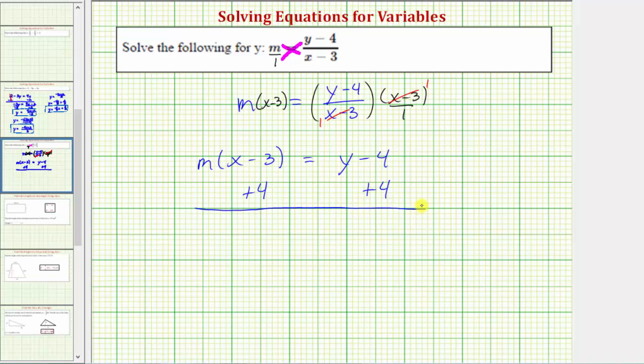And now we simplify both sides, starting on the right side. Adding four undoes minus four, or negative four plus four is zero. So, we have y on the right. On the left, there are no like terms here. We have m times the quantity x minus three plus four.